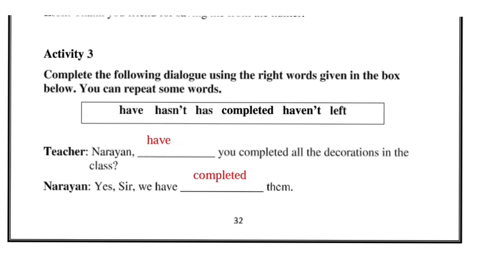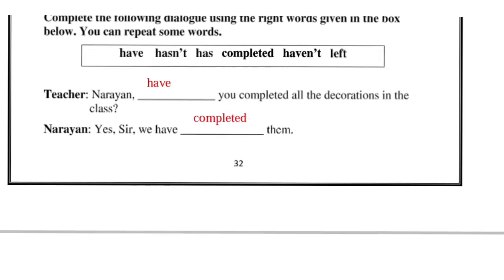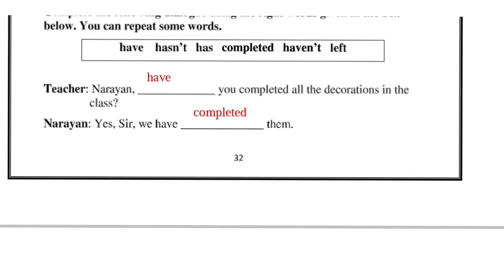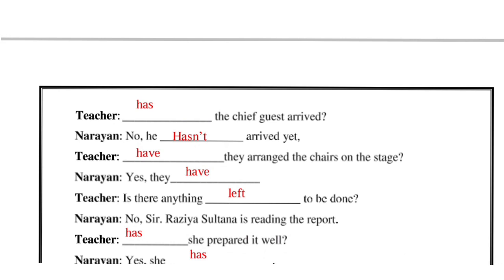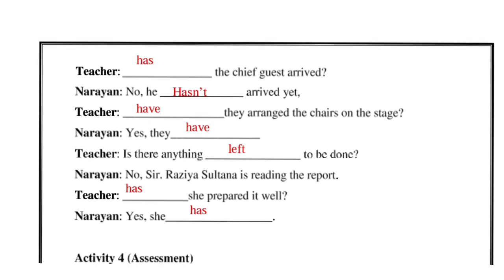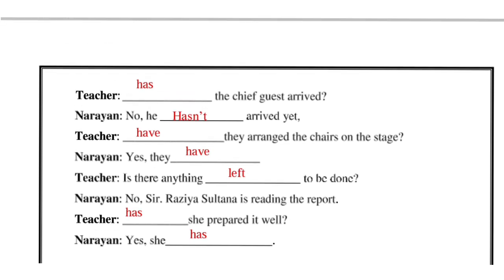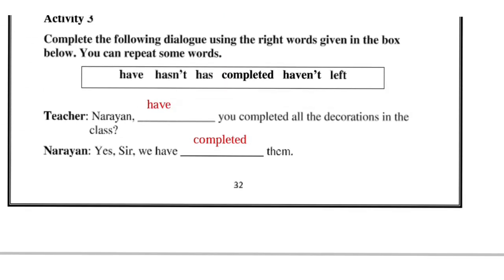Activity 3: Complete the following dialogues using the right words given in the box below. You can repeat some words. The words are: have, hasn't, has, completed, haven't, left. Teacher: Narayan, have you completed all the decorations in the class? Narayan: Yes sir, we have completed them. Teacher: Has the chief guest arrived? Narayan: No, he hasn't arrived yet. Teacher: Have they arranged the chairs on the stage? Narayan: Yes, they have. Teacher: Is there anything left to be done? Narayan: No sir. Rajya Sultana is reading the report. Teacher: Has she prepared it well? Narayan: Yes, she has. You have to fill in the blanks using the words given in the box.